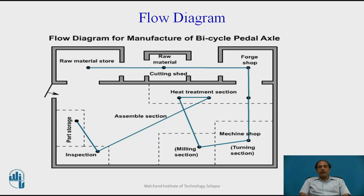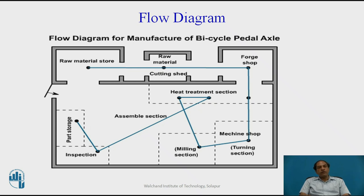The first operation is turning and then it goes to milling. After milling, the job goes to the heat treatment process where heat treatment is carried out. After heat treatment, it is inspected and if okay, it is sent to the assembly section. After assembly, final inspection is done. Once final inspection shows an okay mark, the job is handled to the finished goods store, generally called FG store in typical organizational language.